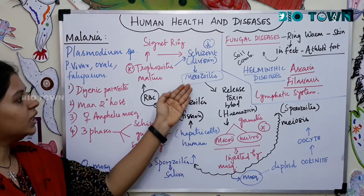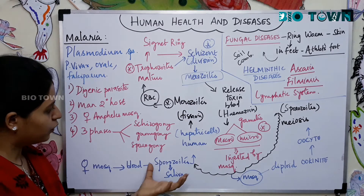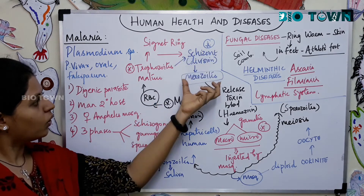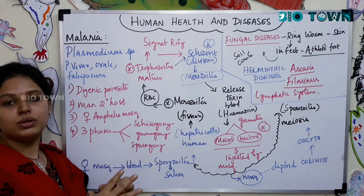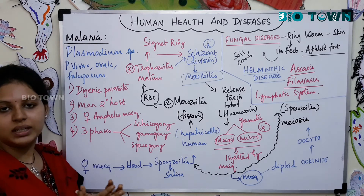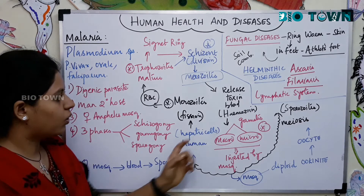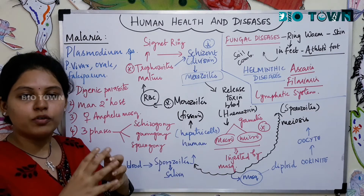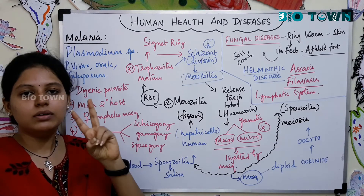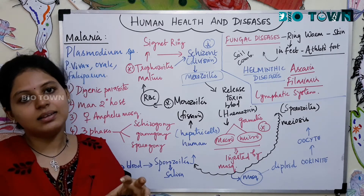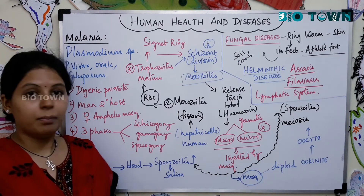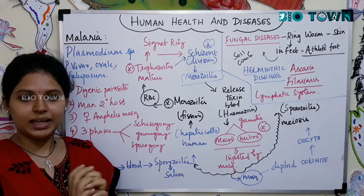The trophozoites undergo division to form schizonts, and the schizonts again undergo division to form merozoites. So the sequence is: sporozoite → merozoite → trophozoite → schizont → merozoite again. These merozoites are the infectious stage where they start liberating toxins onto the RBC cells. Some merozoites liberate two cells — a male gamete and a female gamete.